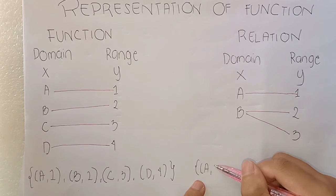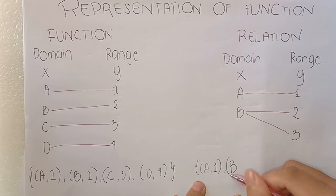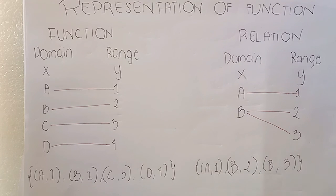A is paired with 1, B is paired with 2, and B again is paired with 3.